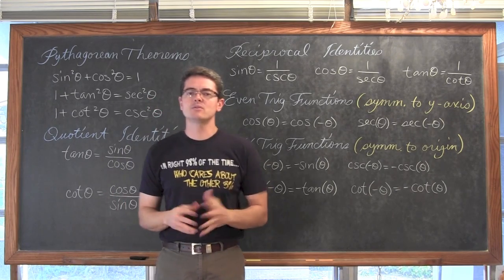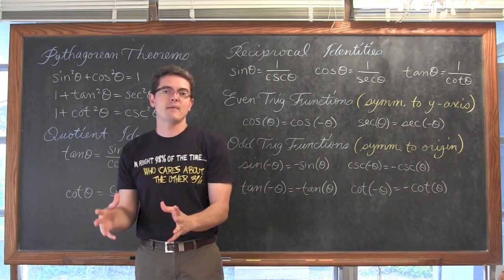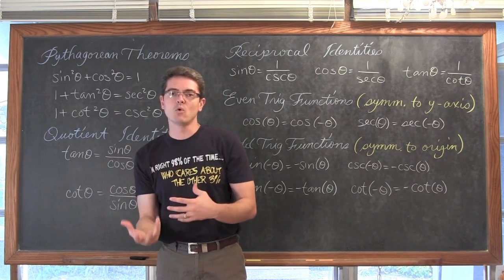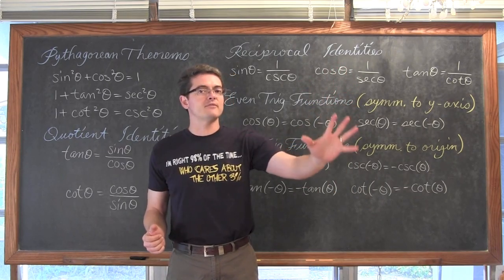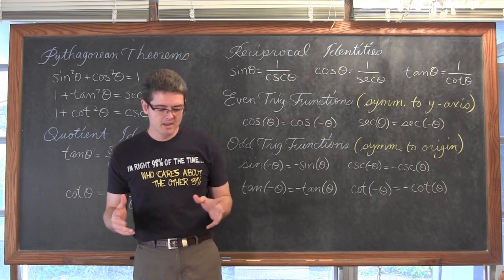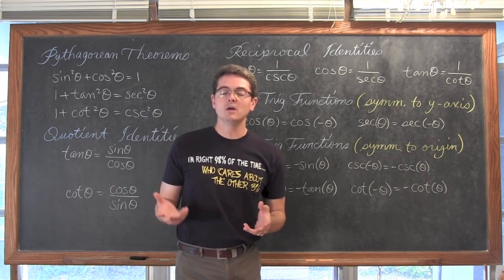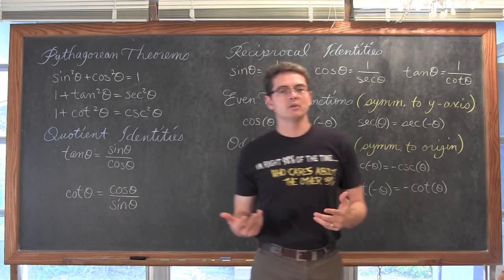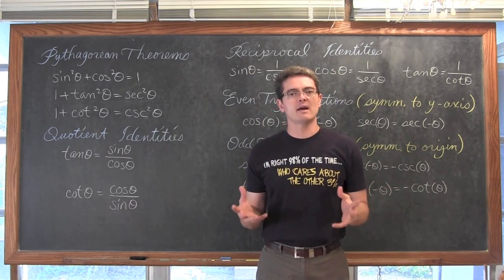Now these proofs are not going to be the two column proofs that we did in geometry where you had your sequence of mathematical steps in this logical order and then a series of postulates and theorems and definitions and properties. That is not what these proofs are going to look like. We still have a lot of memorization we are going to have to do. These proofs are not going to include just you stating transitive property or stuff like that. They are going to look like algebra.